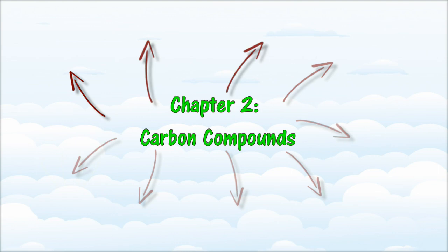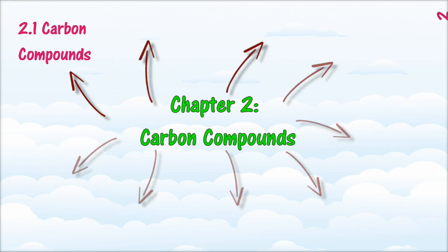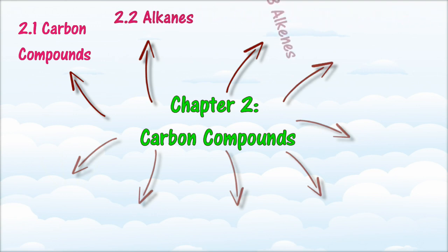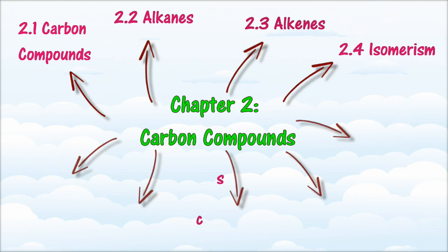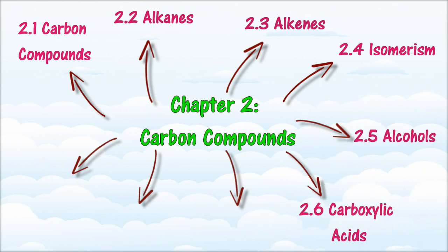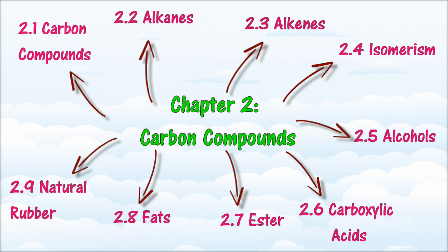There are 9 main sections in this chapter: 2.1 Carbon Compounds, 2.2 Alkanes, 2.3 Alkenes, 2.4 Isomerism, 2.5 Alcohols, 2.6 Carboxylic Acids, 2.7 Ester, 2.8 Fats, and 2.9 Natural Rubber.